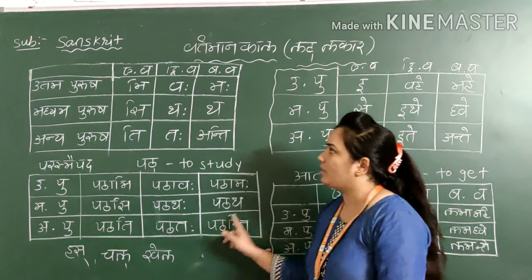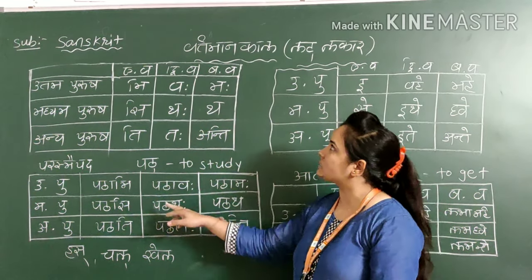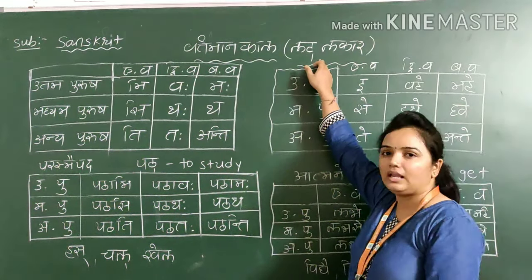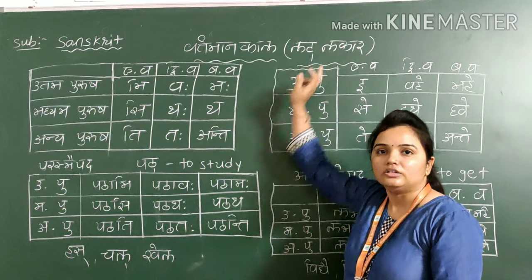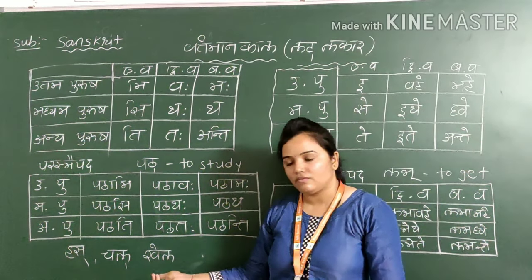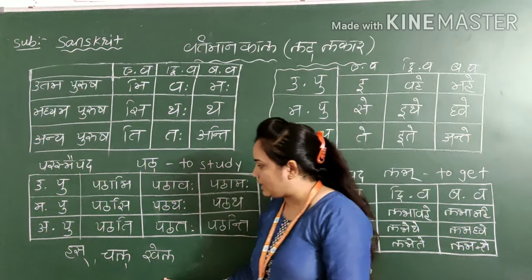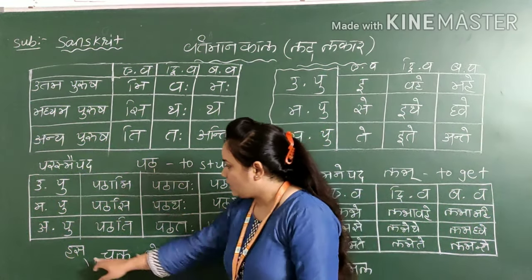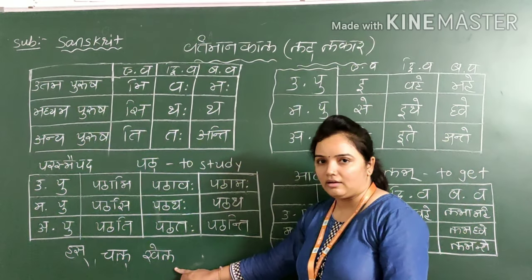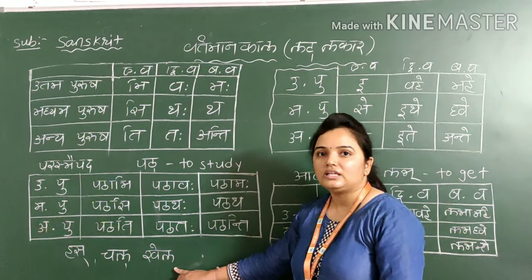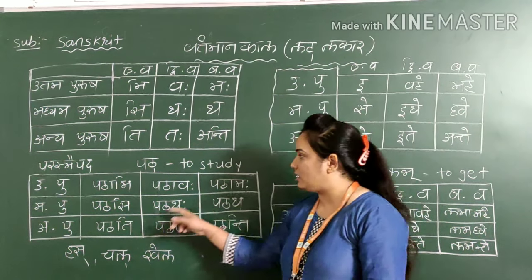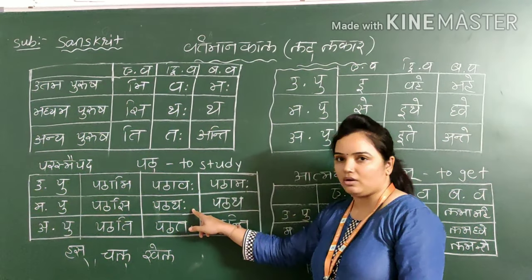So this is the table of Parasmapad Vartaman Kaal, Lat Lakar. You can use other words also in the same way — like hasa, chala, khela. You can implement these words in this table as well.